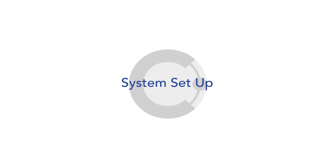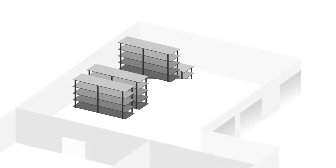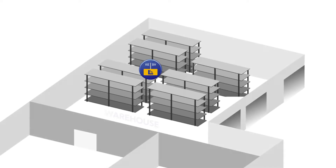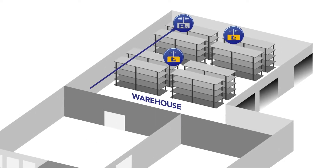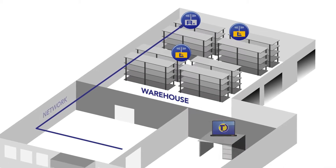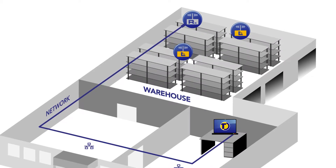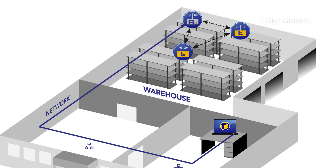Radio and LAN data loggers can be mixed and matched within an application to meet particular site layout and infrastructure requirements. TinyTag radio loggers are easy to set up. Installation can be done by the user and site surveys are rarely needed. Data loggers are located as required and self-configured to form a robust mesh network when switched on.